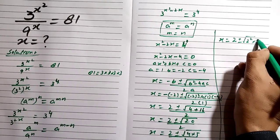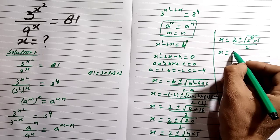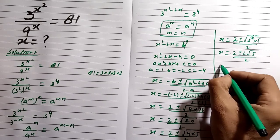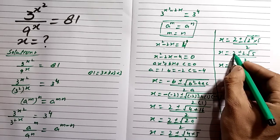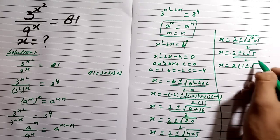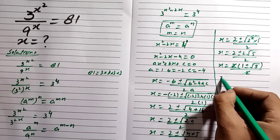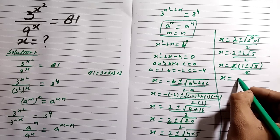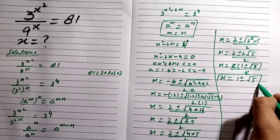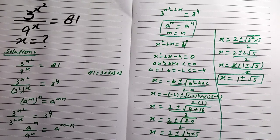Since 4 equals 2 squared, the square root of 4 times 5 equals 2 root 5. So x equals 2 plus or minus 2 root 5, divided by 2. Taking 2 as common from numerator and denominator, the 2s cancel. Our final answer becomes x equals 1 plus or minus root 5.